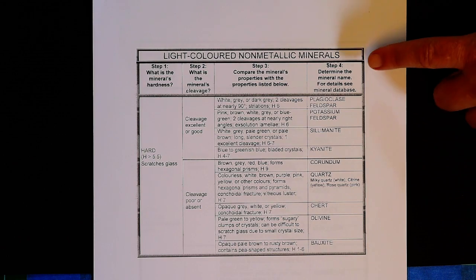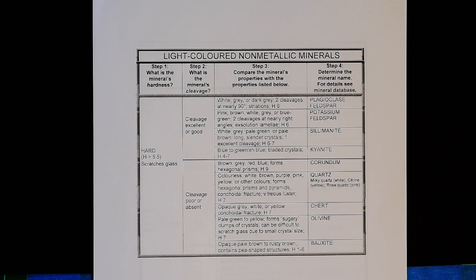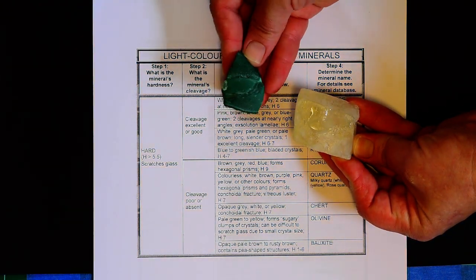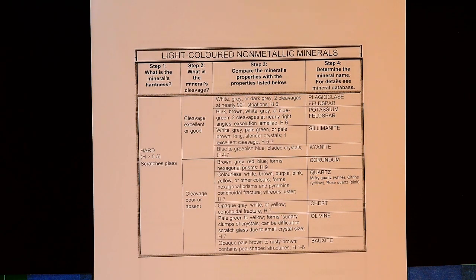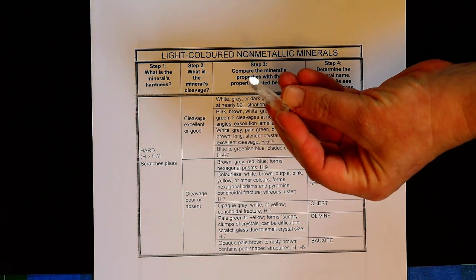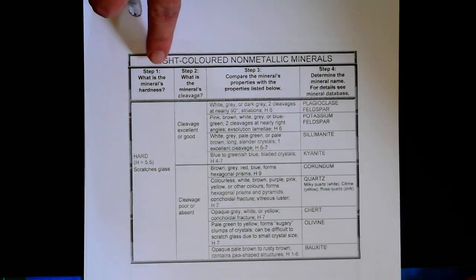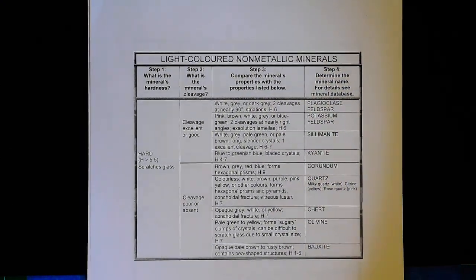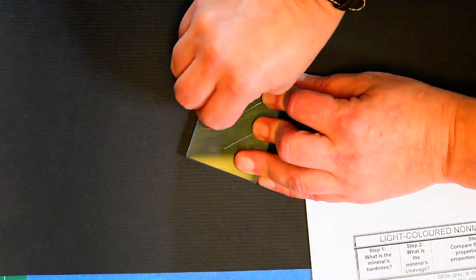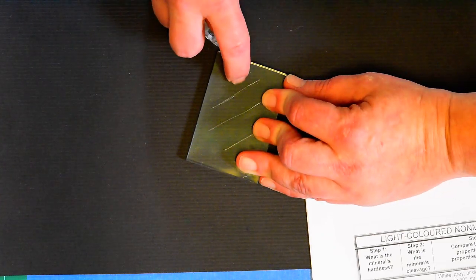For non-metallic minerals, the charts are divided into light colored non-metallic and dark colored non-metallic. Some minerals appear on both charts. For a light-colored non-metallic mineral, the first step is still hardness — scratching it against glass shows it leaves a mark, so it goes on the hard minerals page.